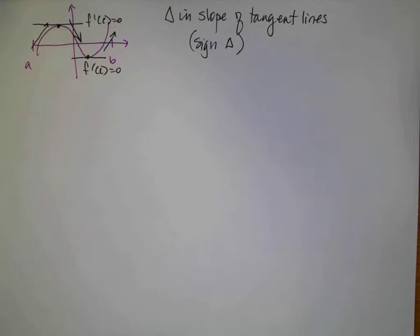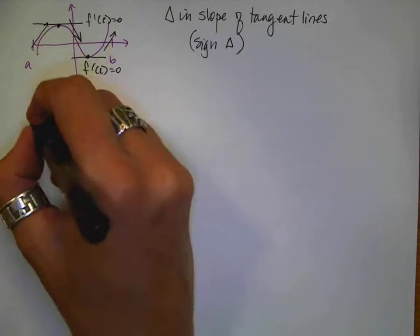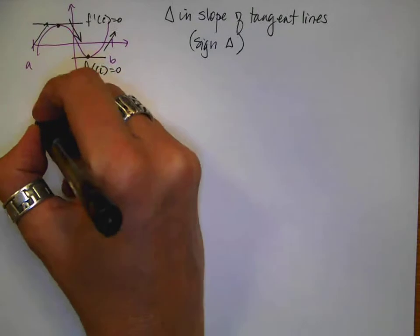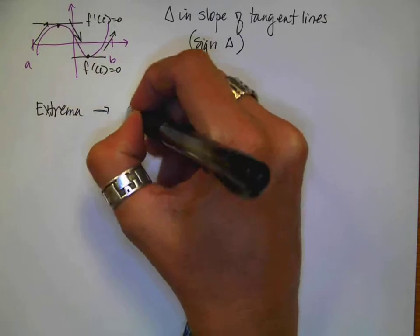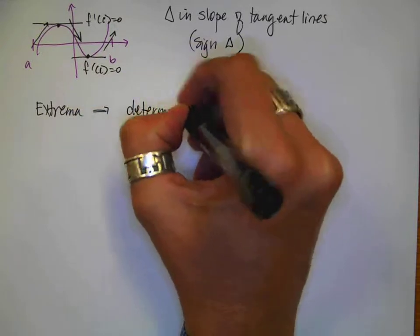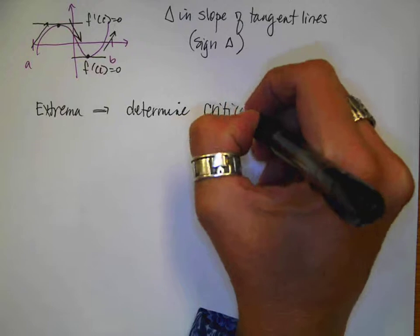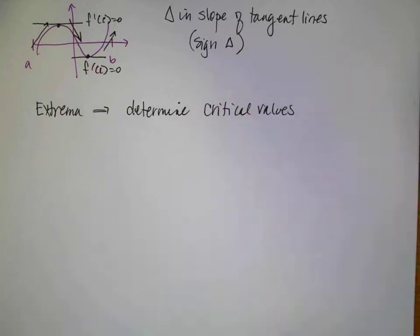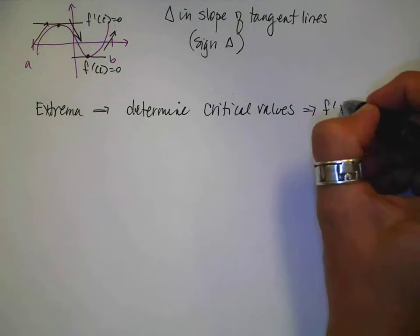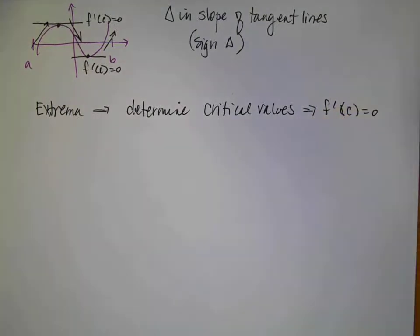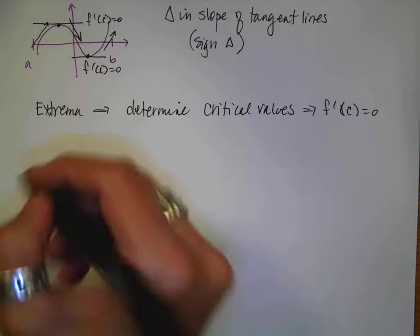So the first thing that we need to do if we are trying to determine extrema is to determine our critical values. The critical values happen where the derivative of the function is zero. So a critical value is going to be where my derivative is zero, because everywhere that my derivative is zero I could potentially have an extrema.